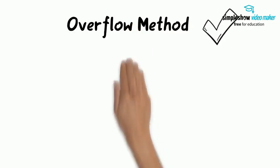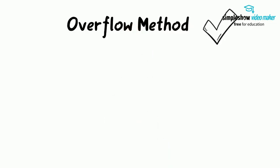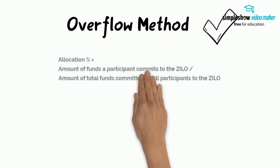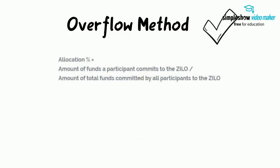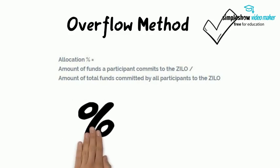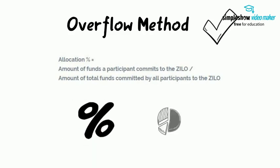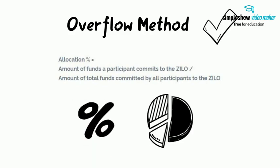By using the overflow method, users can subscribe to as little or as much as they wish via Zylo. The final allocation will be calculated based on the following formula, which is basically a percentage of the overall funds committed.